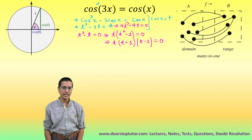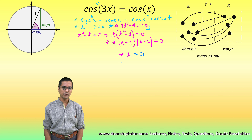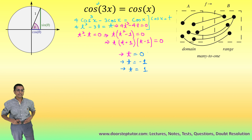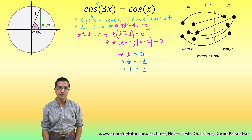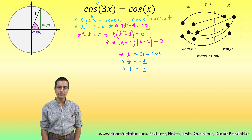From the factored equation we can see it is satisfied for three values of t: t = 0 is the first solution, t = −1 is the second solution, and t = +1 is the third solution. Now we have the solutions in terms of t, but we need to find the solutions in terms of x — meaning we want to find all the angles for which cosine equals 0, −1, or +1.